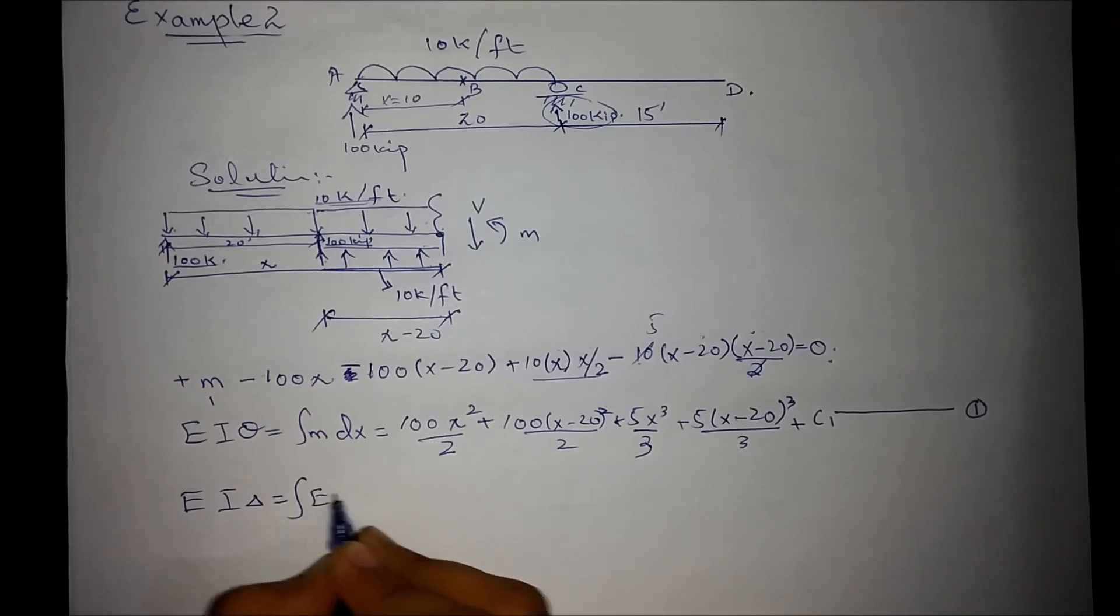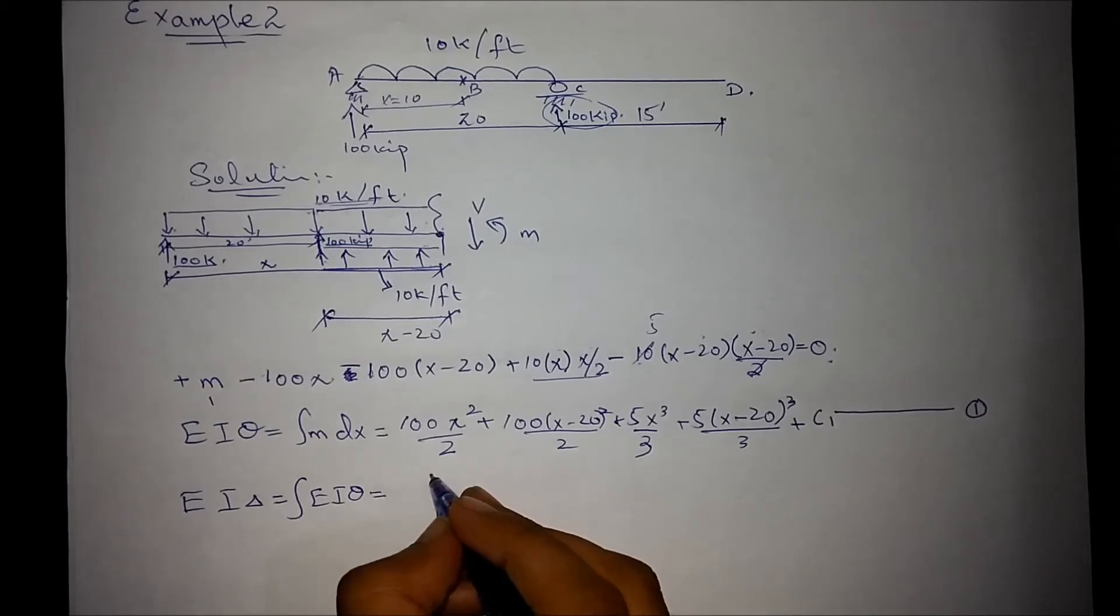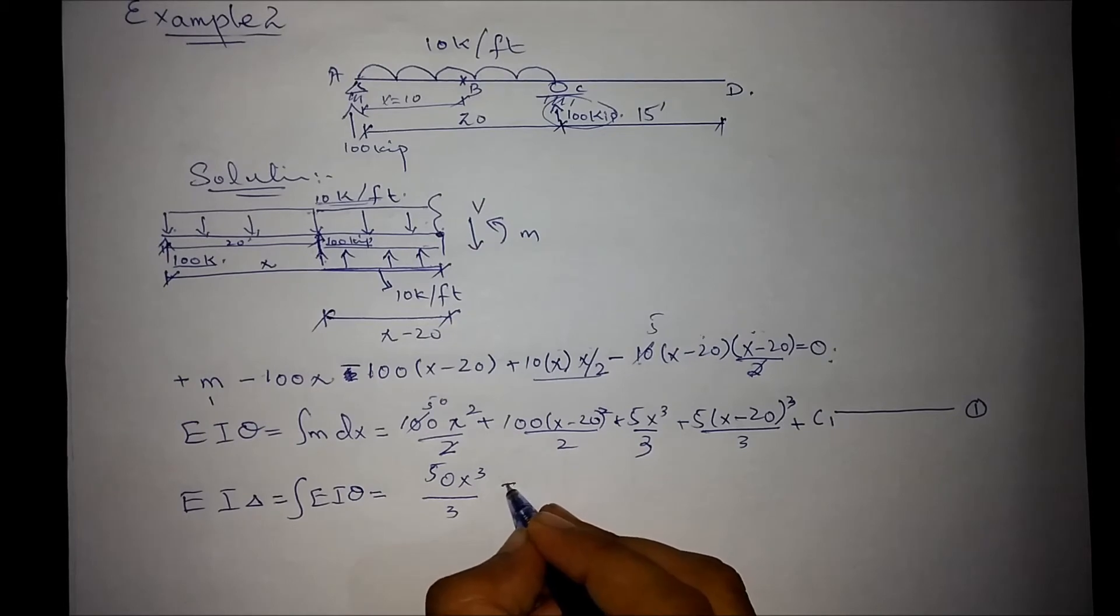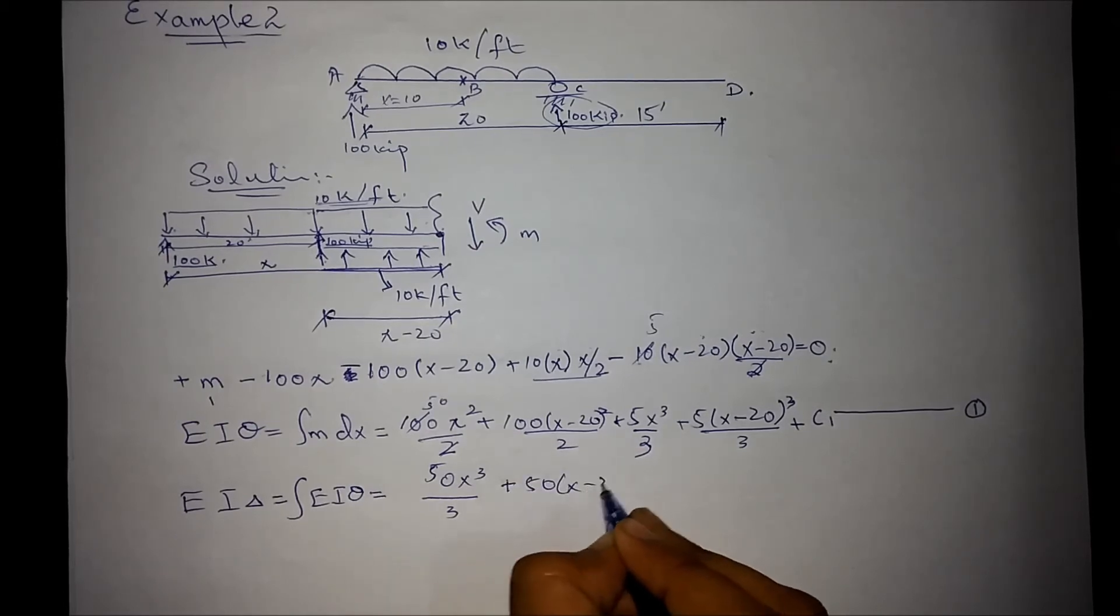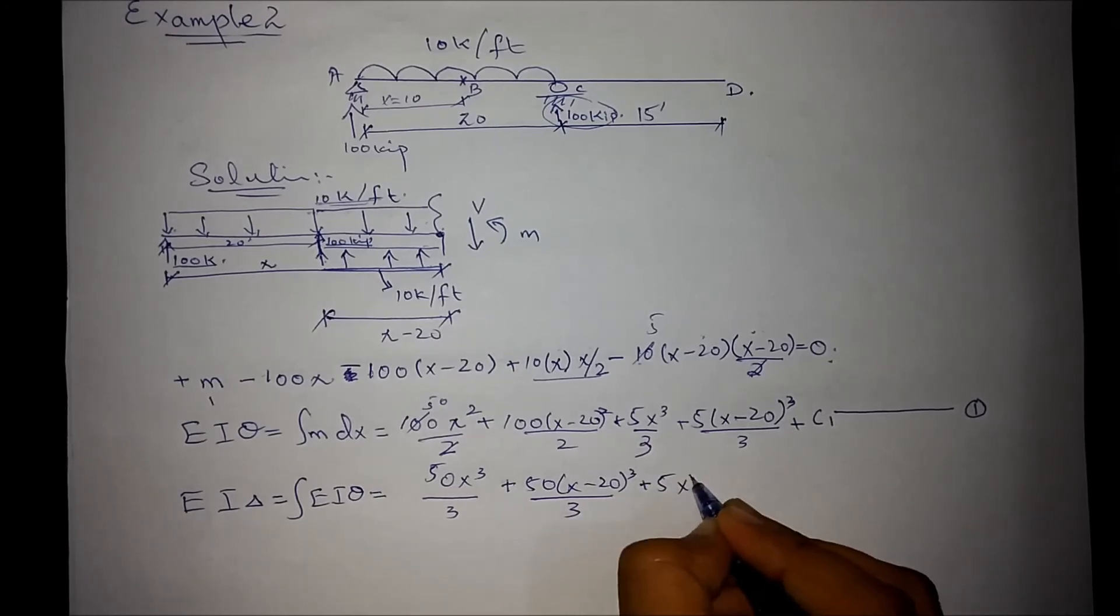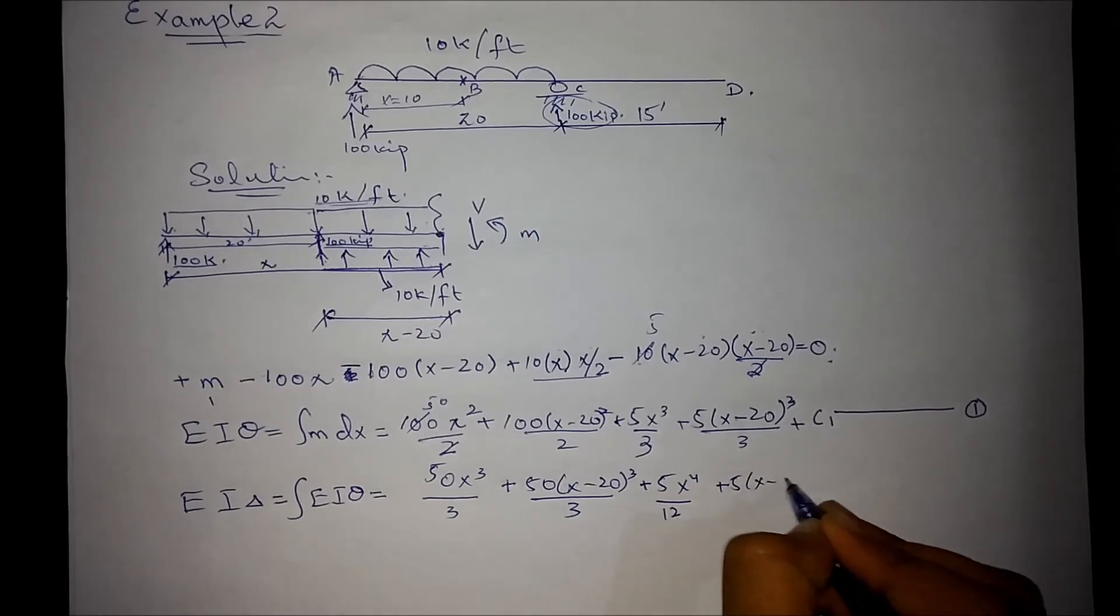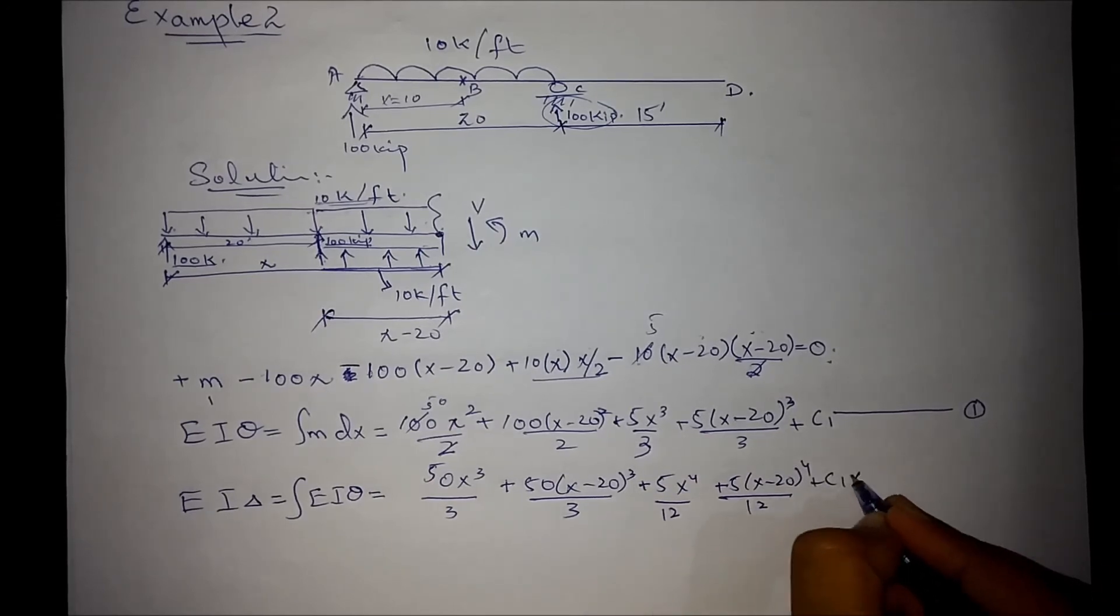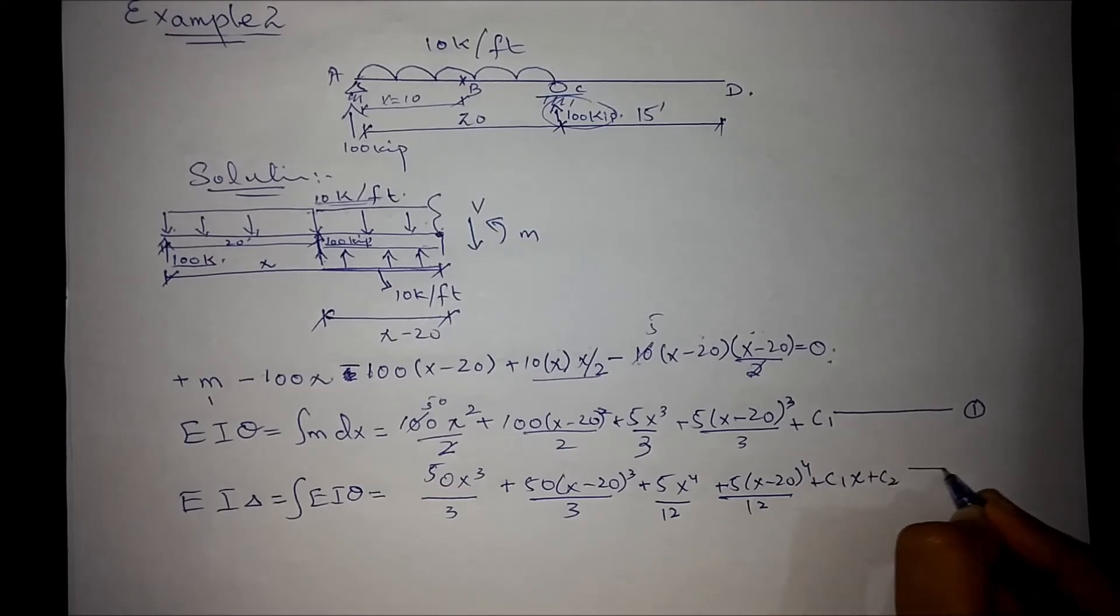By integrating this equation we will get the equation of deflection. That is minus 50x cubed over 3 plus 50 times x minus 20 cubed over 3 plus 5x power 4 over 12 minus 5 times x minus 20 power 4 over 12 plus c1 times x plus c2. Let's call this as equation number 2.